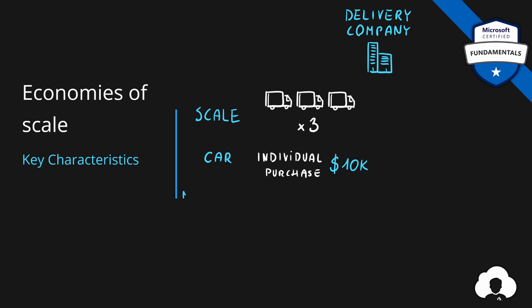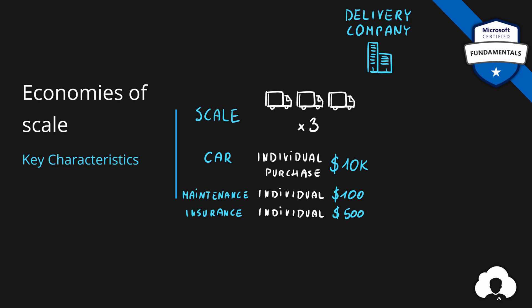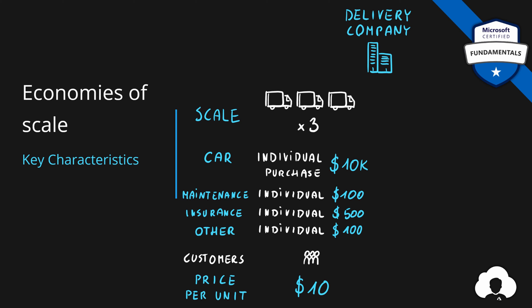Regardless of whether those cars are used or not, you will need to spend some money on the maintenance of those cars. Because your company is very small you cannot make any contracts, so you will need to pay individually for each repair and each maintenance that you need to perform on your own cars. Each car of course needs to be insured, so that's additional costs that you need to incur individually. Based on the costs you need to incur and the number of customers you have, you will need to calculate the price of your service in order to stay profitable. That price is called price per unit — the price you need to charge for the delivery of a package for your company to stay profitable.